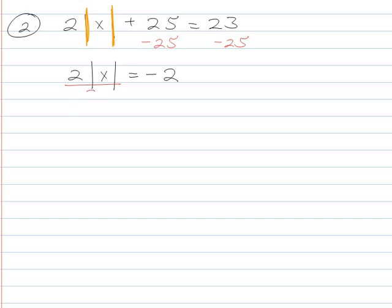Now if I want to get the absolute value by itself, I'm going to have to divide both sides by 2, leaving me with this. And this is a terrible problem to give you, I'm sorry. Absolute value of x is equal to negative 1.